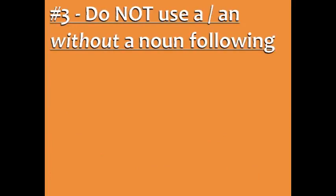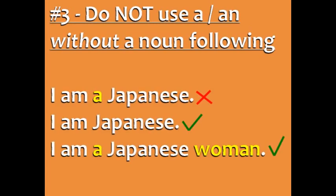Number three: do not use a or an without a noun following it. For example, you can't say 'I am a Japanese' because Japanese is an adjective and there is no noun in the sentence. Instead, you could say 'I am Japanese' or 'I am a Japanese woman.' In this case, it's okay to use a because there's a noun, woman, after the adjective Japanese.